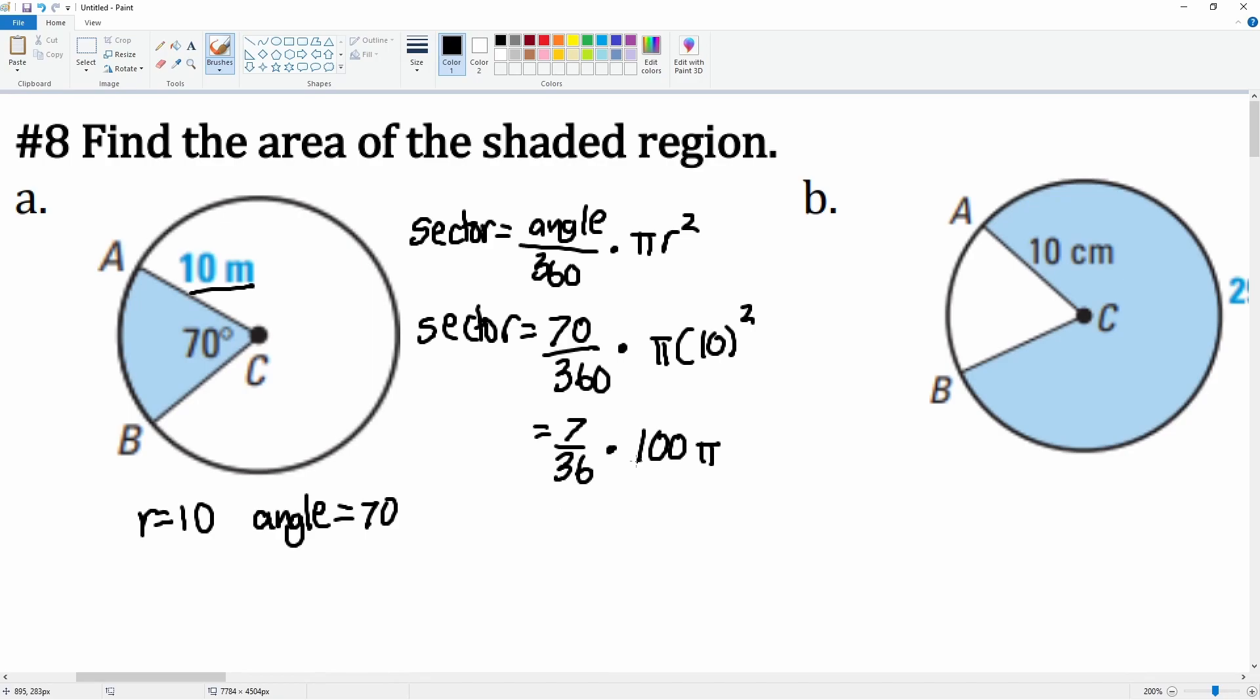This is after I simplify. Now I can just plug this into my calculator. I plug in 7 divided by 36 times 100. This gets me roughly 19.44, and I left it in terms of pi. So you can say the sector equals 19.44 pi, or if you multiply by pi then it is 61.09, roughly, meter squared.